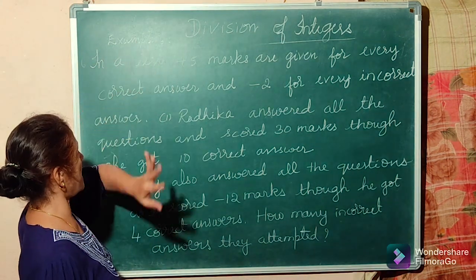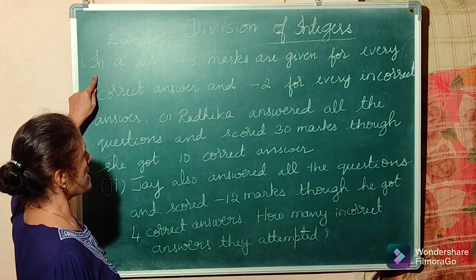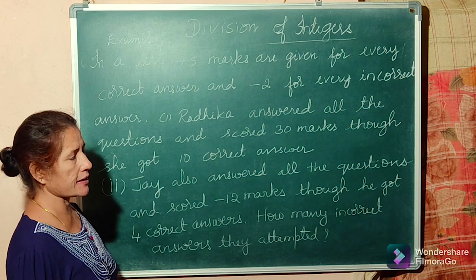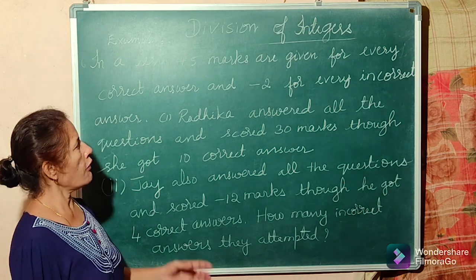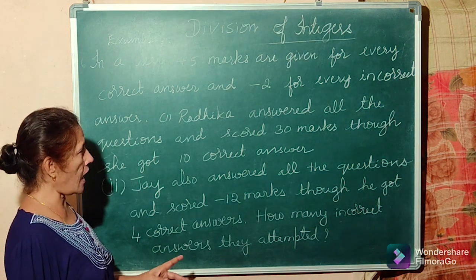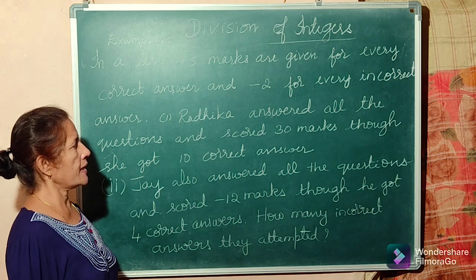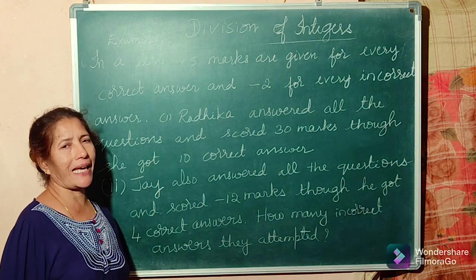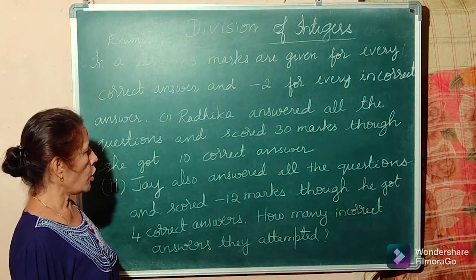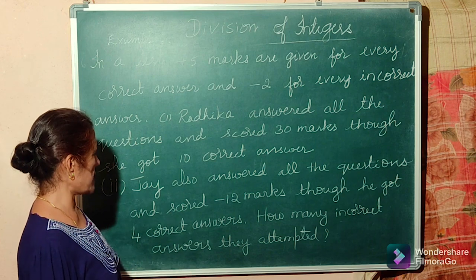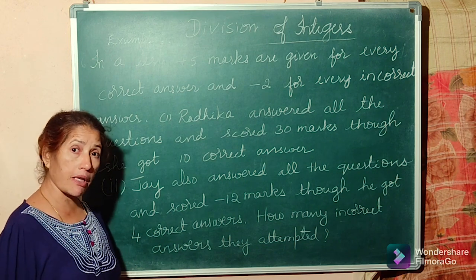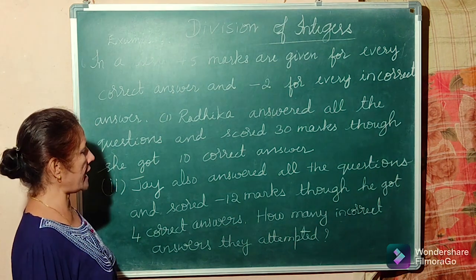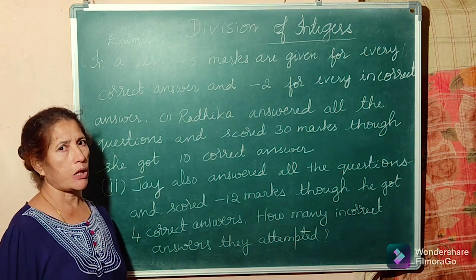First question, Example 6. In a test, plus 5 marks are given for every correct answer and minus 2 for every incorrect answer. Radhika answered all the questions and scored 30 marks, though she got 10 correct answers. Jai also answered all the questions and scored minus 12 marks, though he got 4 correct answers. How many incorrect answers did each take?